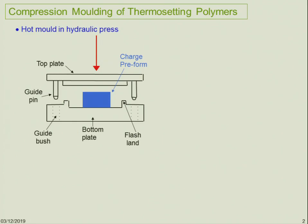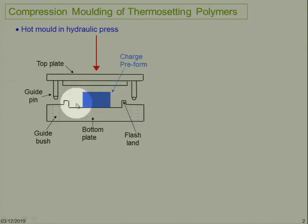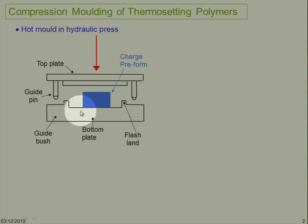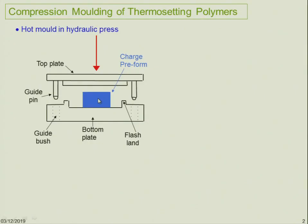Compression molding is a very simple process. You don't need any special type of die or closed tunnels. What we have is a two-sided mold — a fixed side and a moving side. The mold cavity is the shape of the product you need. For example, if you want to produce a tray, you need a mold with that shape. Based on the thickness and dimensions, we can calculate the volume of material required, which we call the charge — a pre-prepared material.